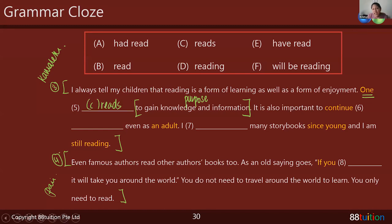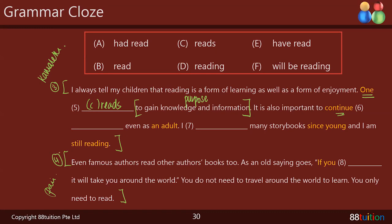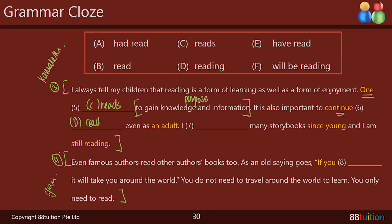It is also important to continue blank even as an adult. The clue is that it is continuing to do something, so it has to be in the continuous tense. Hima answers: 'reading.' Very good — because this is actually in the continuous tense. 'It is also important to continue reading even as an adult.' Thank you, Hima.